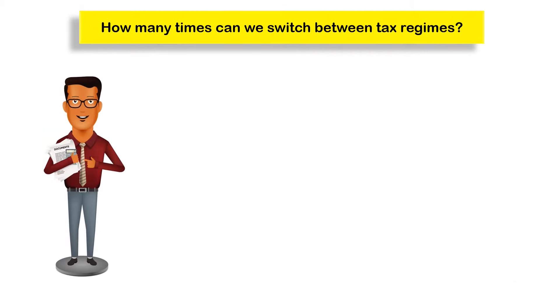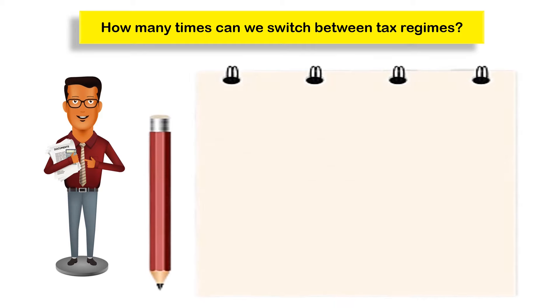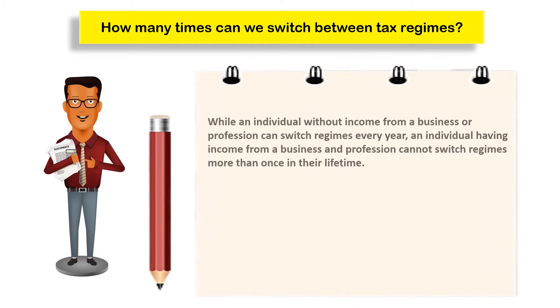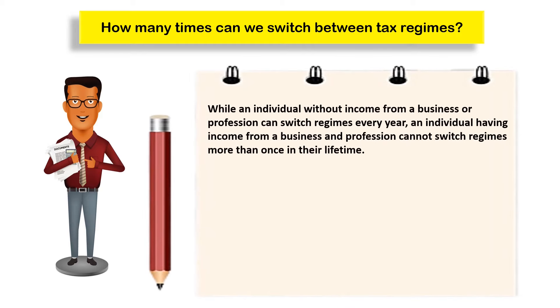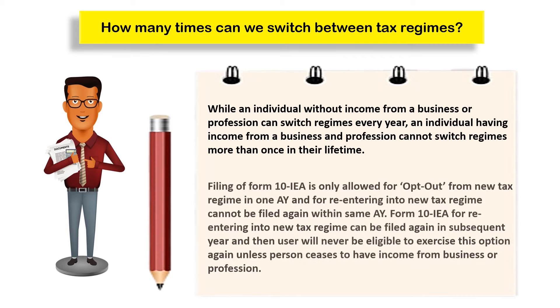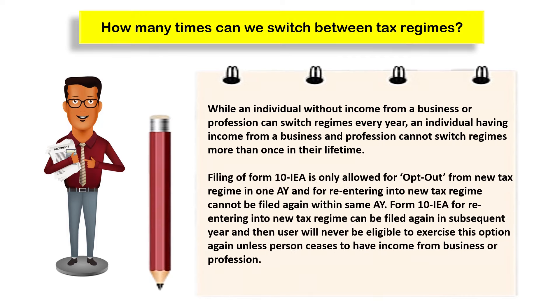We are regularly getting questions as to how many times one can switch between the tax regimes. Please note: while an individual without income from business or profession can switch regimes every year, an individual having income from business or profession cannot switch regimes more than once in their lifetime.